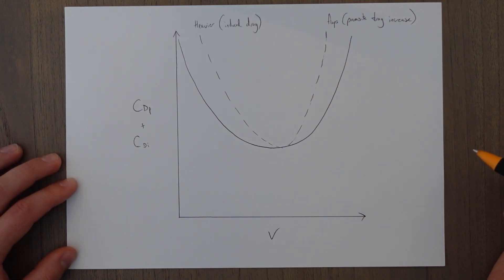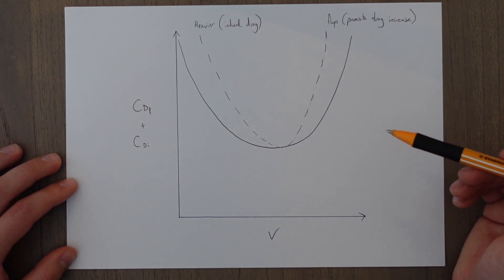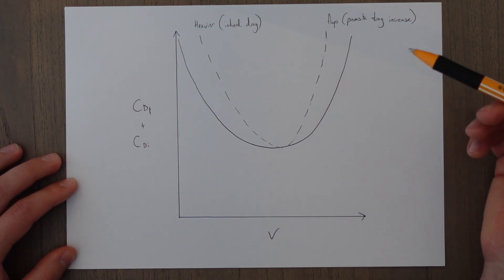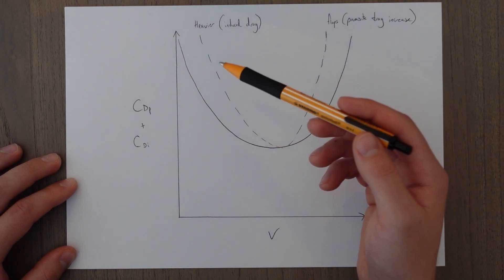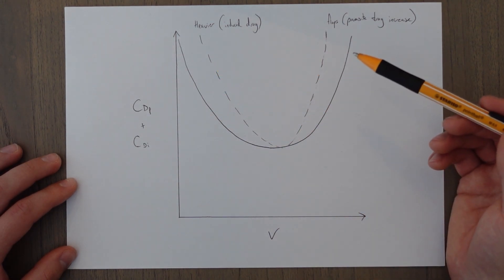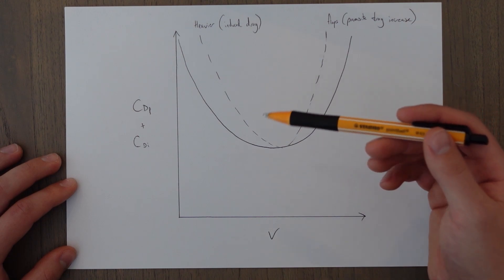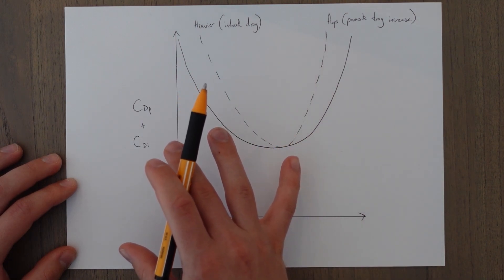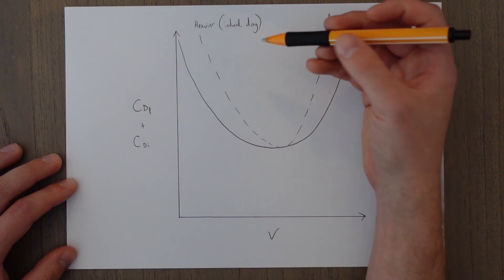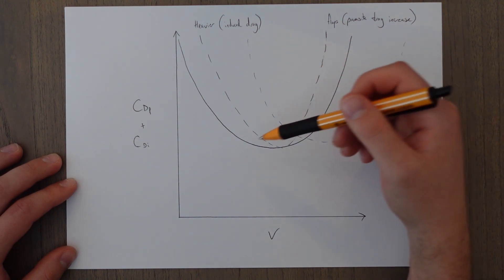Another factor that influences the total drag curve is altitude. At lower air density — higher up in the atmosphere — there are fewer molecules so we have to be traveling faster to produce the correct amount of lift, as long as wing design stays the same. Because induced drag only exists when we create lift, induced drag only starts being produced at this higher speed. The same applies for parasite drag. Fewer molecules mean the effects are not felt until traveling at a faster speed, so the total drag curve shifts horizontally to the right.